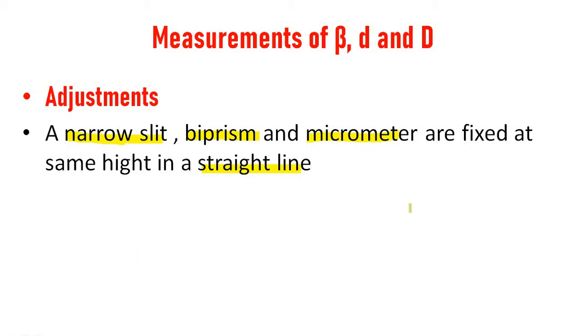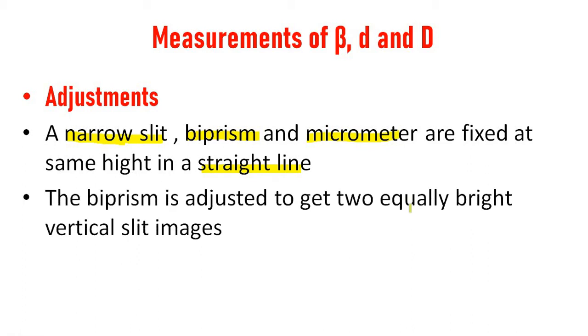This is how we need to align the experimental setup. The biprism is adjusted to get equally bright vertical slit images. We need to adjust the biprism to get two equally bright vertical images, and vertical slit images are fixed here.